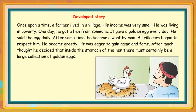Developmental Story From an Outline. Once upon a time, a farmer lived in a village. His income was very small and he was living in poverty. One day, he got a hen from someone. It gave a golden egg every day.